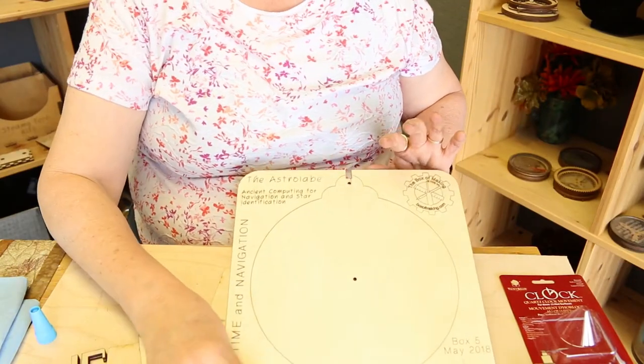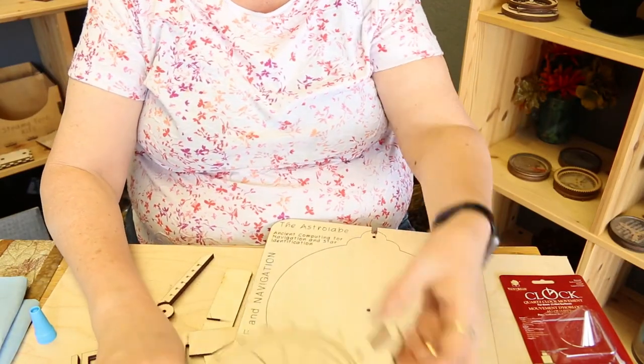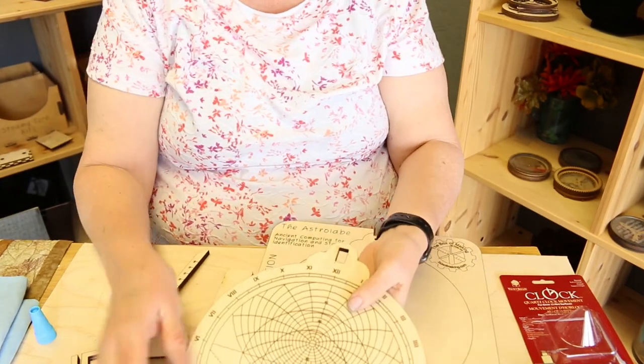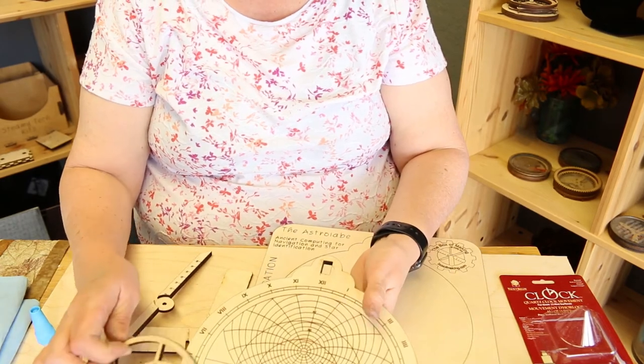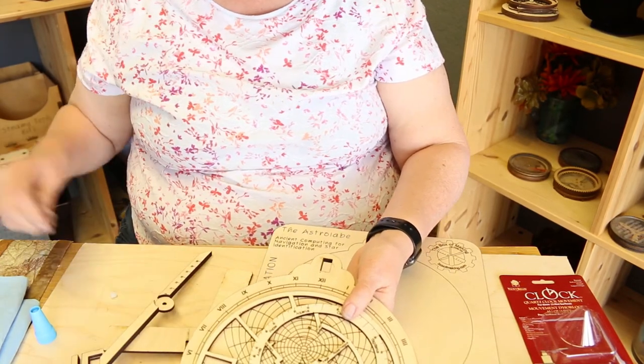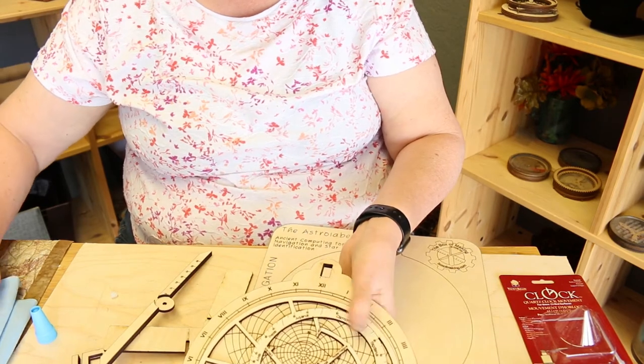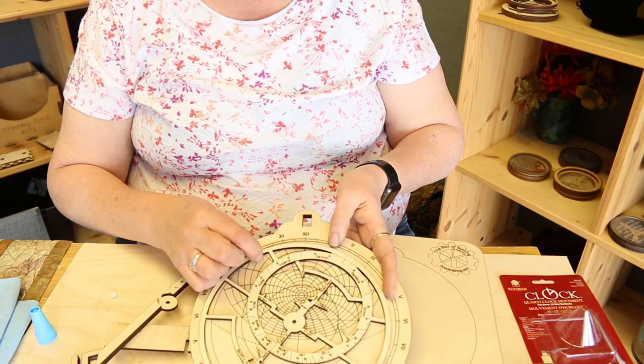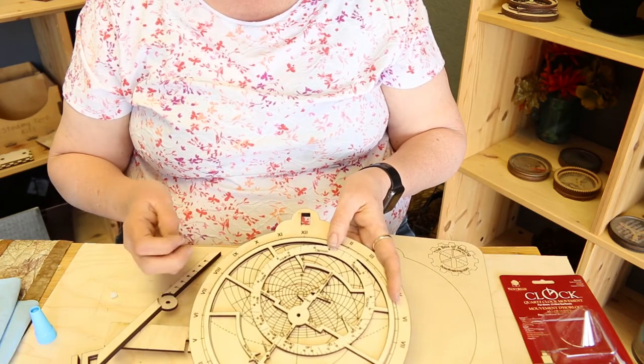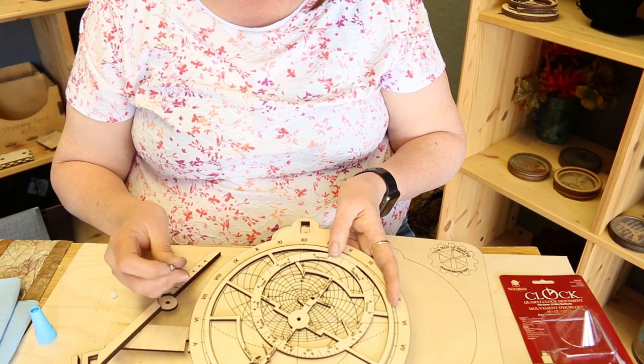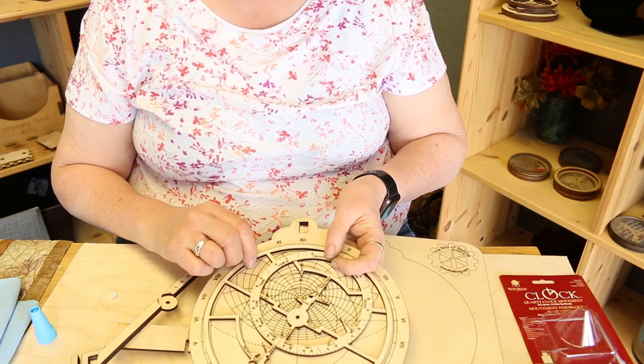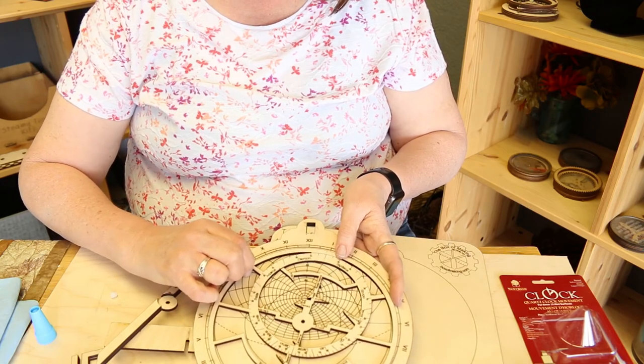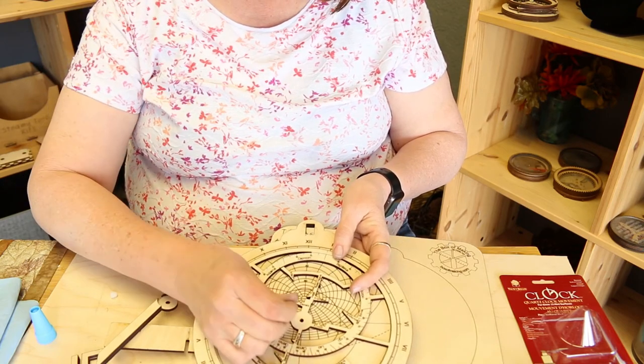Once you have all your pieces glued together, you're ready to put together your astrolabe. This is the front. This is the back. Notice that these are built for a custom latitude and longitude. If you want something specific to your location, we've built this for the Steamy Tech, let us know, and for a minimal charge, we'll cut you a new one at your location. But if you're just going to use it for decoration, it doesn't really matter anyway. Or if you're in Northern California, you're probably fine.